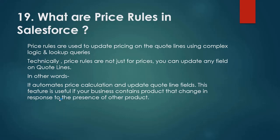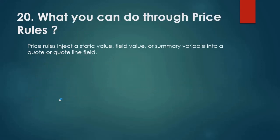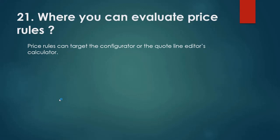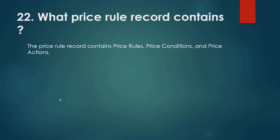What are price rules in Salesforce CPQ? Price rules are used to update pricing on the quote line using complex logic and lookup queries. Technically, price rules are not just for prices — you can update any field on quote lines. In other words, it automates price calculation and updates quote line fields. This feature is useful if your business has products that change in response to the presence of other products. Through price rules you can inject a static value, field value, or summary variable into a quote or quote line field. Price rules can target the configurator or the quote line editor. A price rule record contains price conditions and price actions.